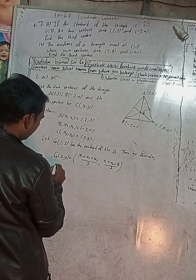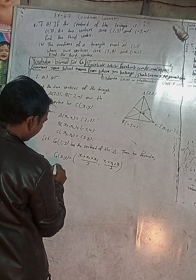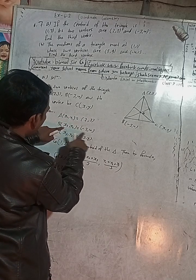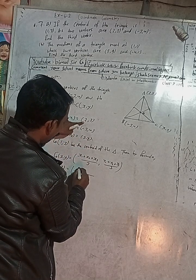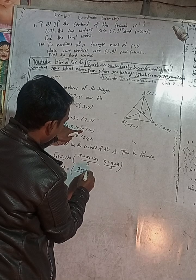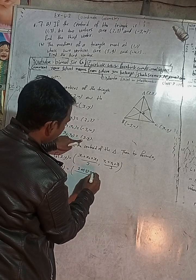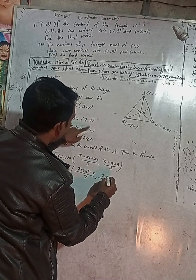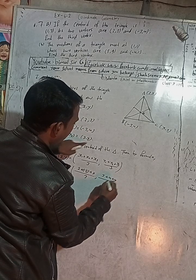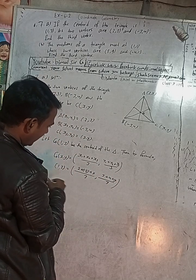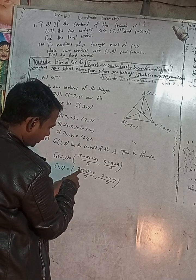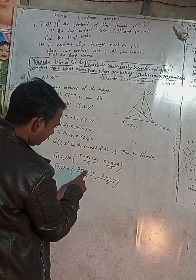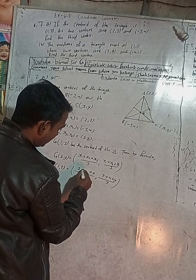So we write: (1, 3) = ((2 + (−3) + x)/3, (3 + 4 + y)/3). That gives us (1, 3) = ((2 − 3 + x)/3, (7 + y)/3). You can write plus minus as a single minus — so 2 minus 3 gives minus 1, and we have (−1 + x)/3 and (7 + y)/3.